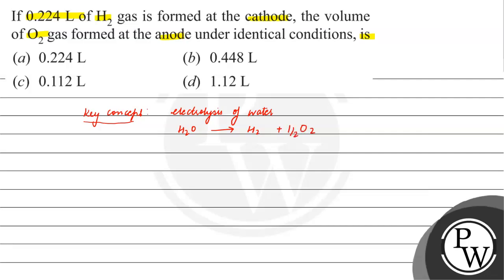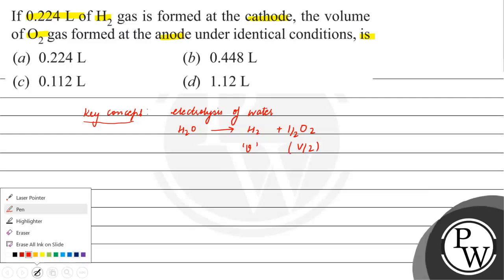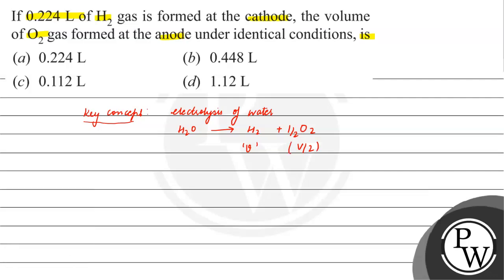Now let us see the equation. If the volume of H2 is V, then the volume of O2 will be V divided by 2. This is a balanced equation — if this volume comes after electrolysis, then it will be V by 2, since half O2 is getting liberated.